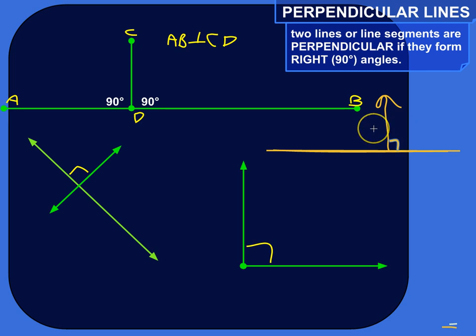But two lines might be perpendicular but not look exactly like that right away. So these two lines here are perpendicular because they form a 90 degree angle. Even though the whole thing is kind of slanted off in this direction, that's okay. As long as they form 90 degree angles, they're perpendicular.